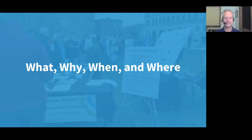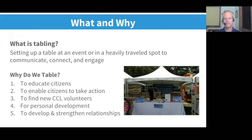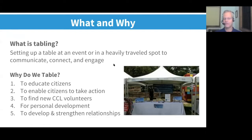Tabling is basically setting up a table somewhere where there's an event or heavy traffic to communicate, connect, and engage with citizens. Outreach is one of the five levers of creating political will, and tabling is a great way to do outreach. Citizens Climate Lobby tables for several reasons. The first is to educate citizens — to let them know we exist and that there's a solution that will be beneficial, fair, and have global reach.